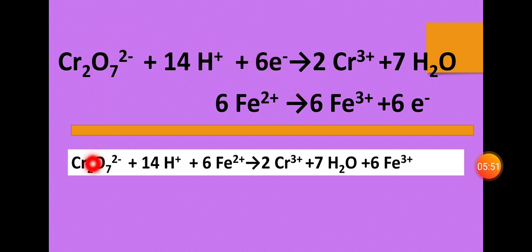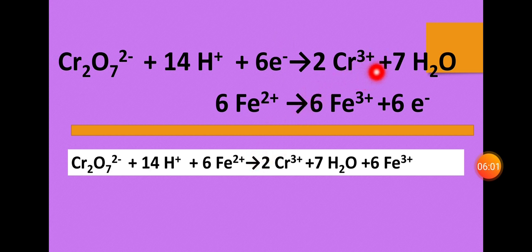We can cut the electrons. Cr2O7 2- + 14H+ + 6Fe2+ on the left side gives 2Cr3+ + 7H2O + 6Fe3+ on the right side. The 6 electrons cancel out and are not part of the final equation.